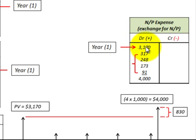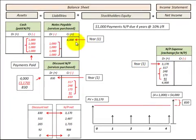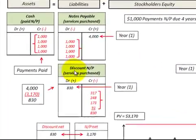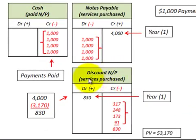We look here at the $3,170 that we charged to the notes payable expense — that was the debit amount — and then the credit was $4,000 to notes payable. So we have to make up the difference, the debit balance difference. We do that through a discount to notes payable, which is a contra-account to notes payable where it works in an opposite direction.